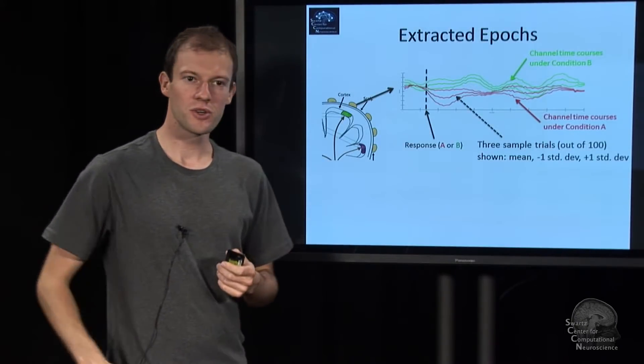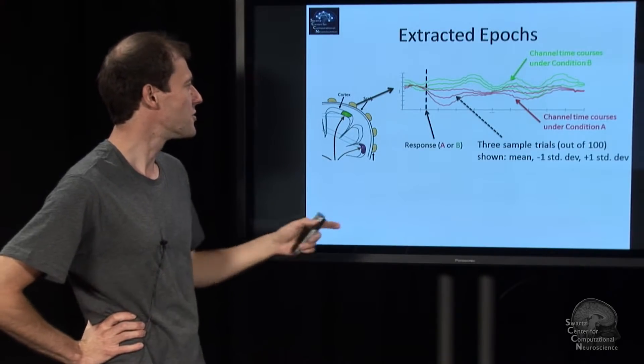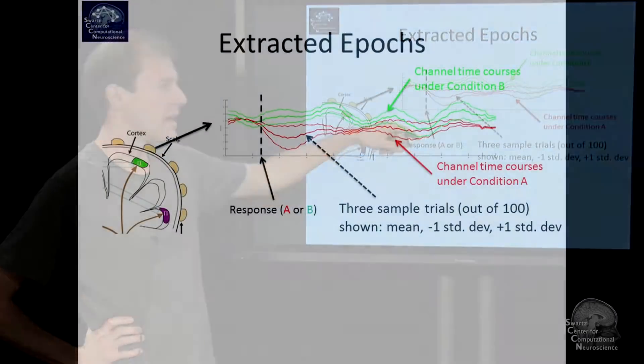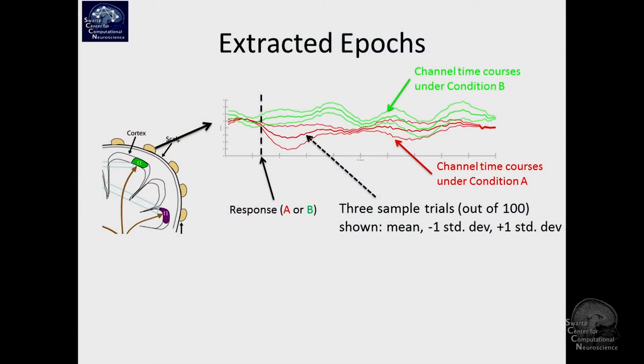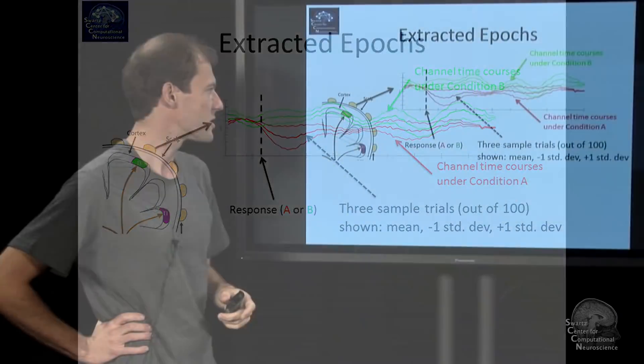So we'll switch to a cartoon here. You have your response and you have multiple trials. We'll draw some of them red and some in green. We have the mean and standard deviation here - the mean is the thick trace and the standard deviation is the dotted trace.